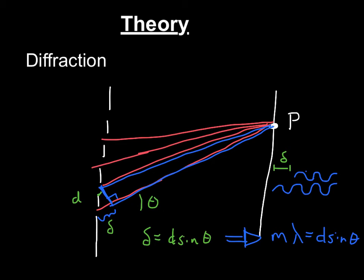And you can tell that this delta is the difference in path length between this path right here and this path right here. Or the upper path and the lower path. So this delta is equal to d, your separation distance, times sine of theta. Where this theta and this theta are the exact same.